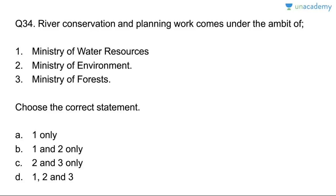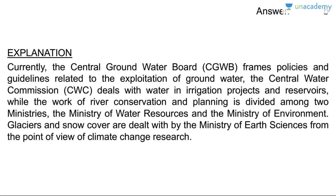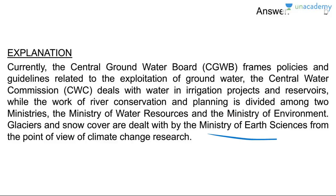Question thirty-four: river conservation and planning work comes under which ministry? Ministry of Water Resources and Ministry of Environment — both, but not Ministry of Forest. Answer is B, one and two. CGWB frames policies on groundwater exploitation; the Central Water Commission deals with water and irrigation projects. River conservation planning is between the Ministry of Water Resources and Ministry of Environment. Glaciers and snow cover are dealt with by the Ministry of Earth Sciences.